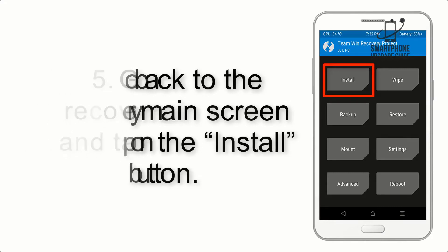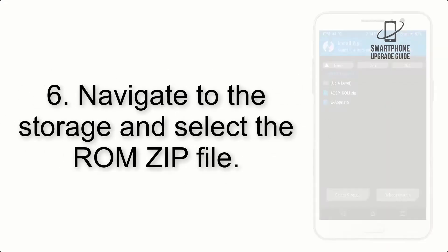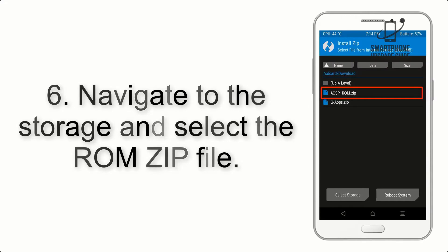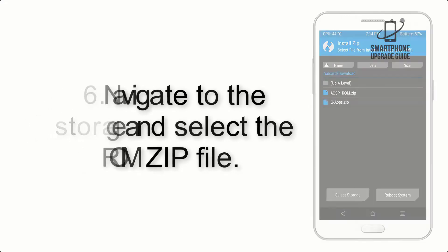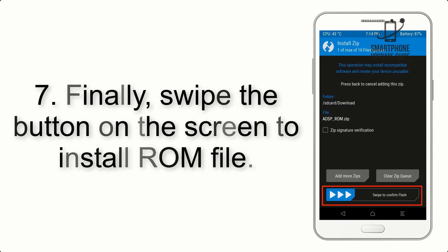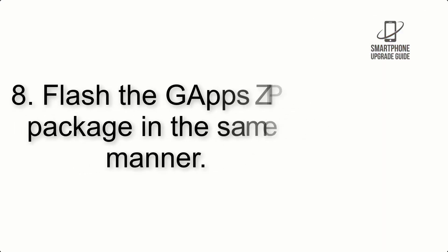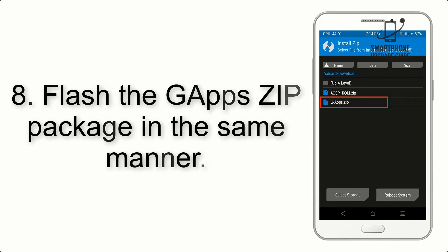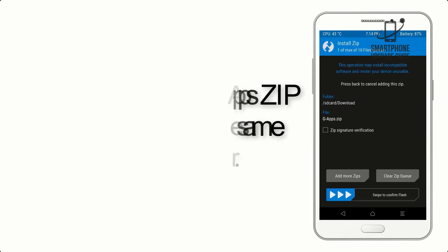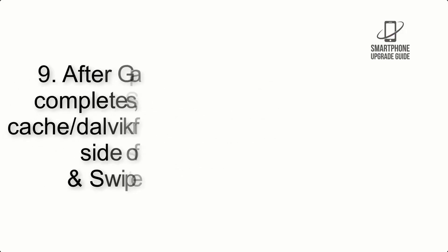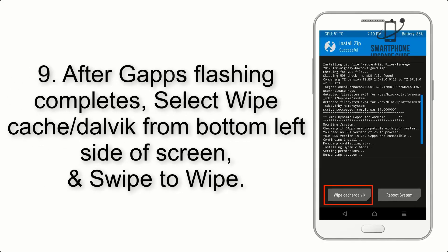Tap on the Install button. Step 6: Navigate to the storage and select the ROM zip file. Step 7: Swipe the button on the screen to install the ROM file. Step 8: Flash the GApps zip package in the same manner.